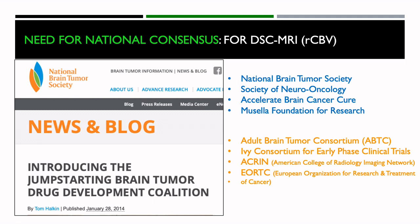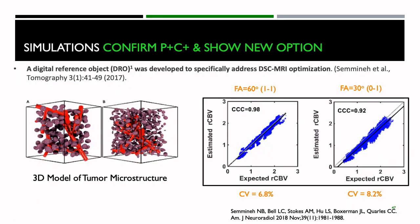In 2014, many brain tumor societies came together — including the Micella Foundation — and said we have to come up with a final national consensus for DSC-MRI to create relative cerebral blood volume maps. Part of this effort was a working group that used a digital reference object — a sophisticated computer model — to determine the best combination of acquisition parameters and post-processing methods for the most accurate RCBV maps. The computer simulations confirmed that the technology we are currently using was still the most accurate and most robust.